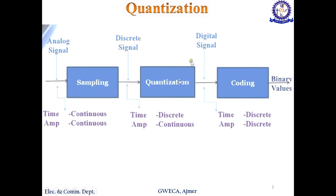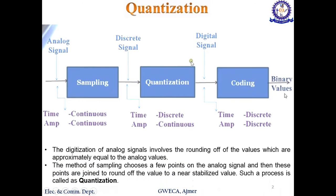This continuous-amplitude, discrete-time signal x(n) is fed to the quantization process — also known as a quantizer. After quantization you get a digital signal. In a digital signal, your time is discrete and your amplitude is also discrete. In a discrete signal your time is discrete but amplitude is continuous, whereas in a digital signal both time and amplitude are discrete. After that it is fed to a binary coded system and you get binary values.